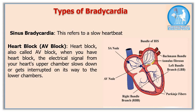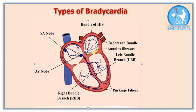Heart block is a condition wherein the electrical impulses from the upper chambers of the heart do not reach the lower chambers, due to a problem in the AV node. The AV node blocks these electrical impulses partially or completely. You can see that the electrical impulses from the upper part of the heart are heading towards the AV node; if there is a problem in the AV node, it will block those impulses partially or completely, causing the heartbeat to slow down, and skipped heartbeats are also very common.